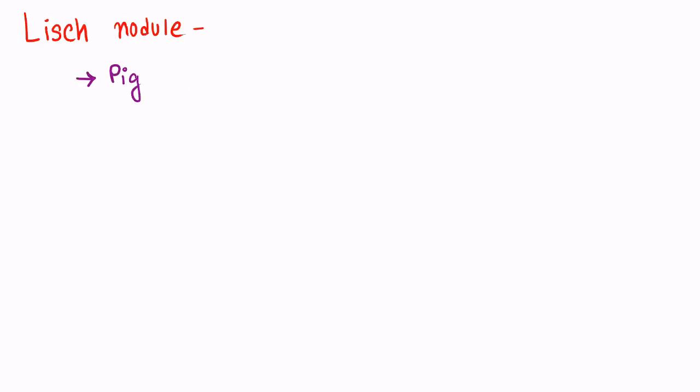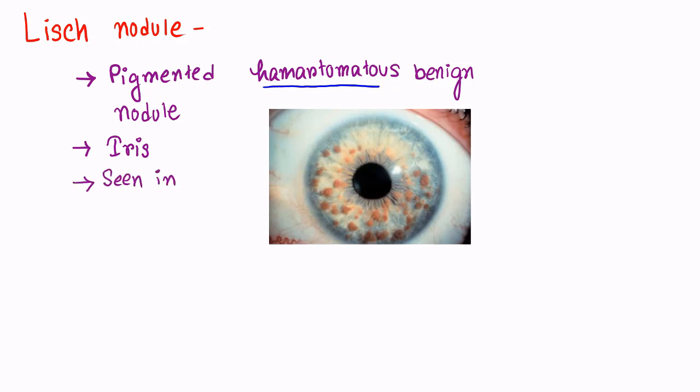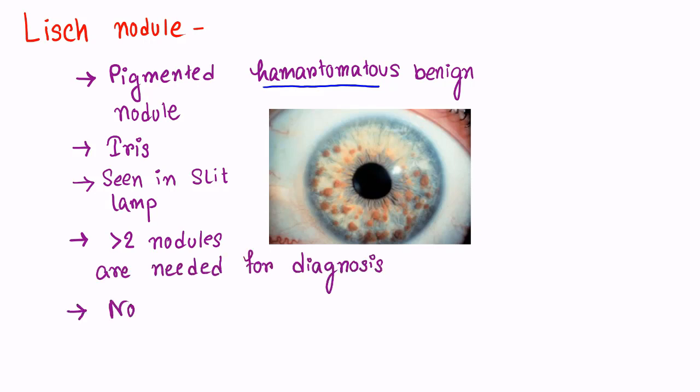Next is Lisch Nodule. They are pigmented hamartomatous benign nodules. Hamartoma is a benign tumor-like growth. They are seen in iris only with the help of slit lamp. More than 2 nodules are diagnostic for NF1. It doesn't affect the vision.